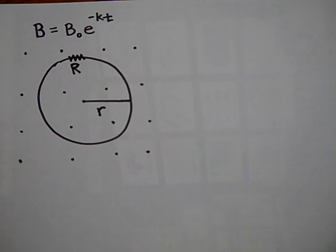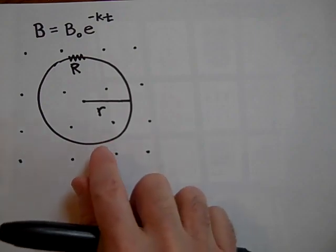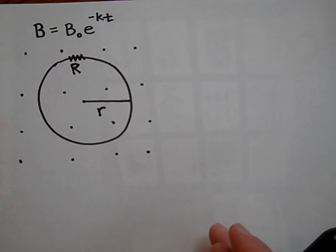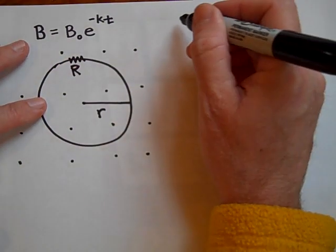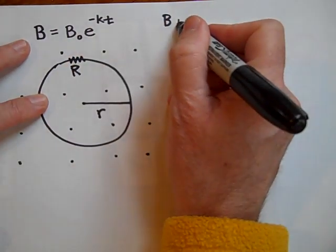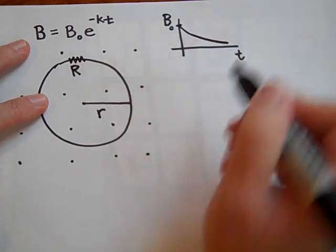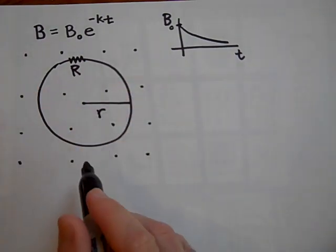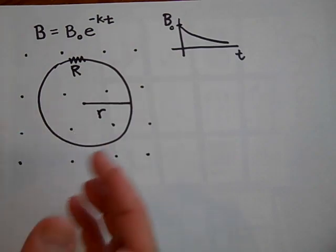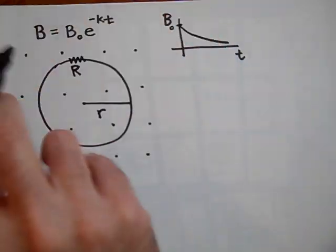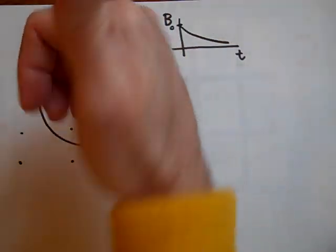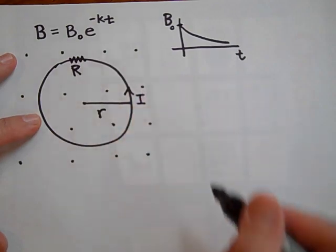First of all can you tell me which way the current will be induced in this loop if the B is changing with this function. Okay, so this function is actually a decay function. If I graph B versus T for this function, it starts out at B naught and it swoops down and decays. So that means the dots are disappearing. So if the dots are disappearing then this is going to try and make its own dots. To make its own dots, it's going to have current going this way.